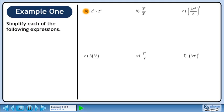Simplify each of the following expressions. We are multiplying two powers with the same base, so add the exponents. This gives us 2 raised to the power of 7. 2 raised to the power of 7 evaluates to 128.